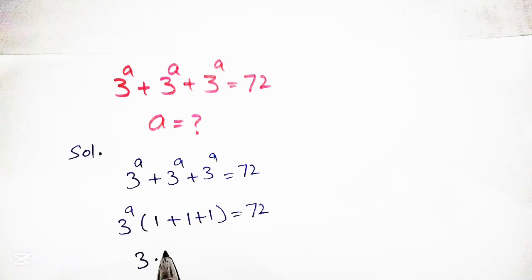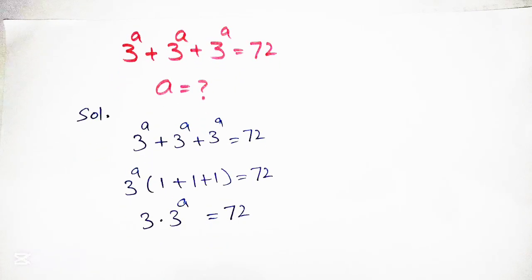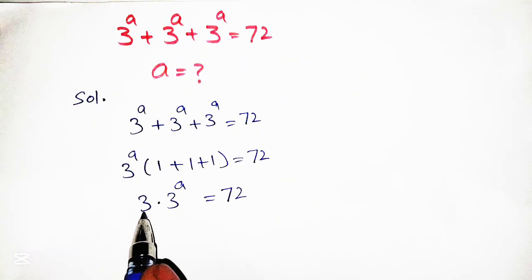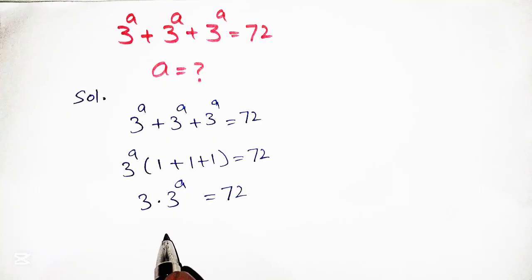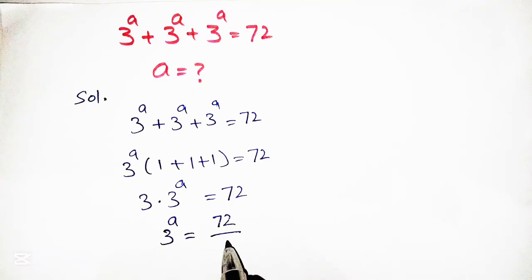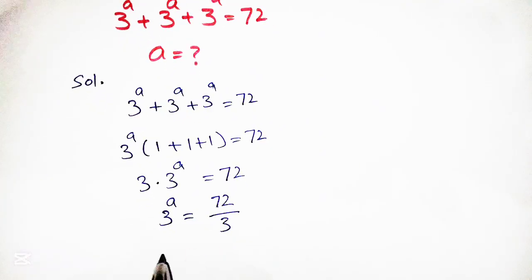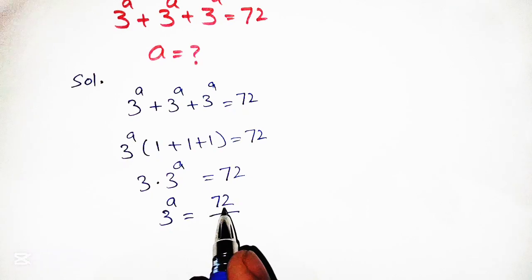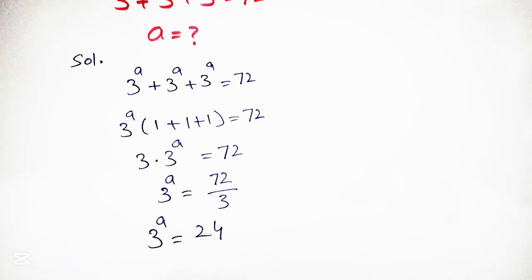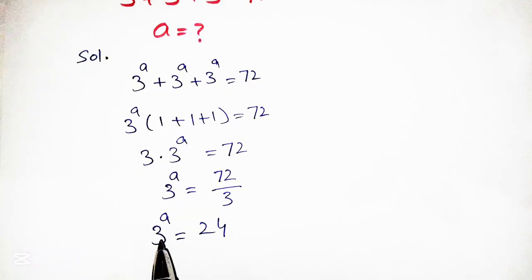This becomes 3 into 3 raised to a is equal to 72. To simplify, we divide 3 on the right-hand side, so we get 3 raised to a is equal to 72 over 3. The 3 cancels with 72 and we get 24, so 3 raised to a is equal to 24. Now to find the value of a, which appears in the power, we will apply logarithm.